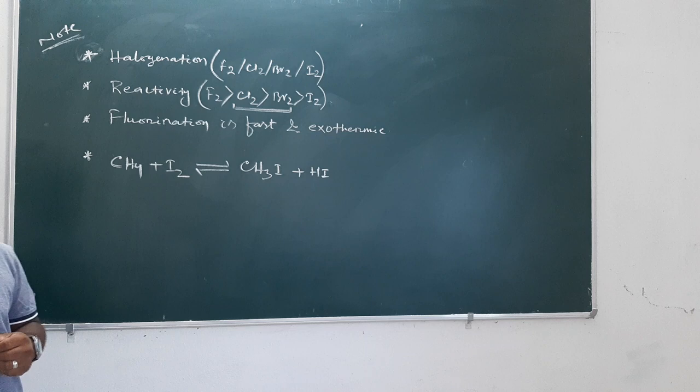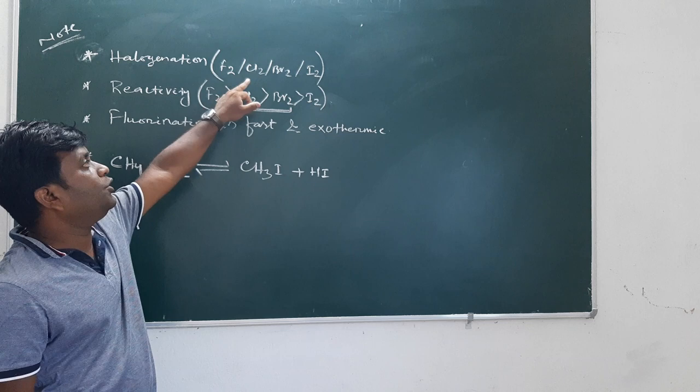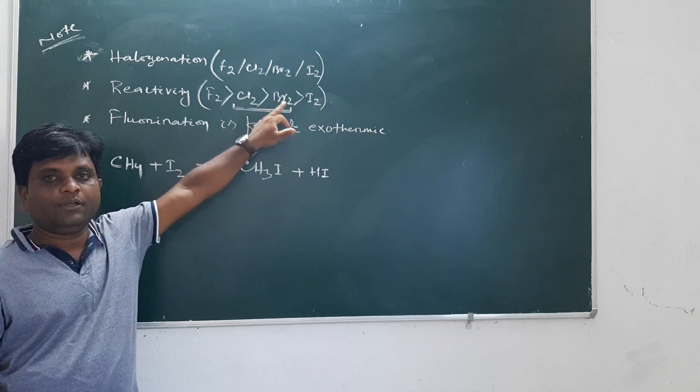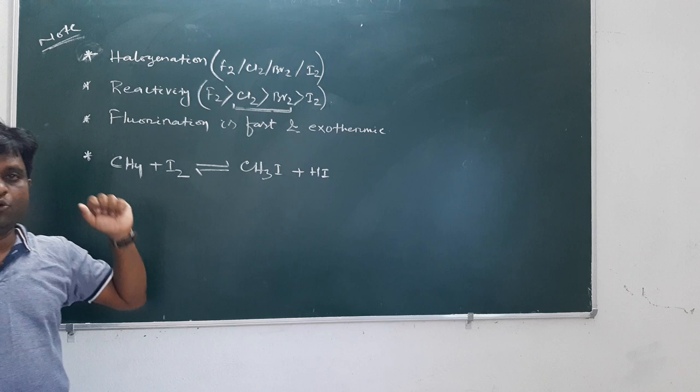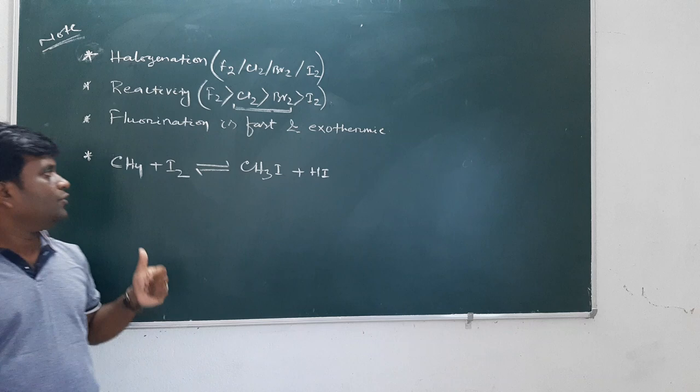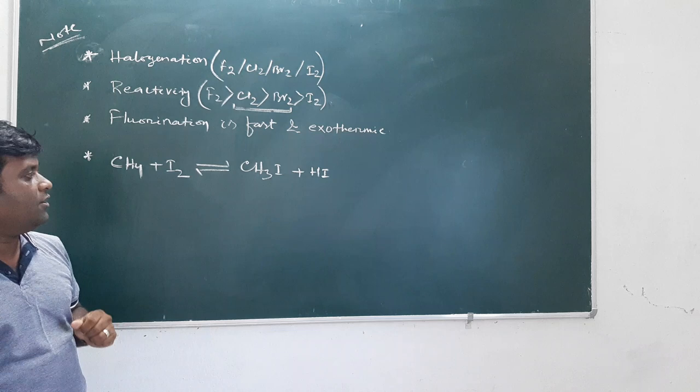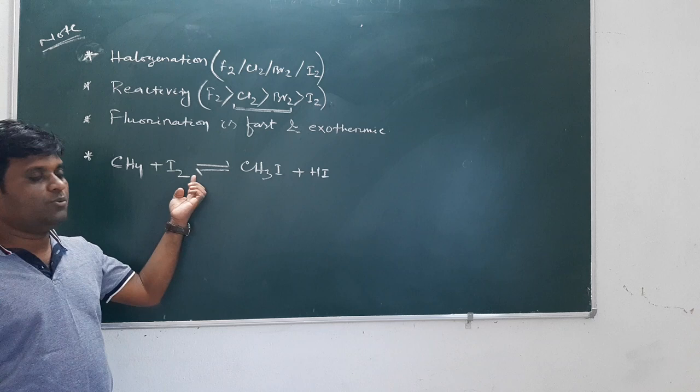Now some important points about halogenation. The reactivity towards alkanes is: fluorine greater than chlorine greater than bromine greater than iodine. Fluorination is very fast, which cannot be controlled, and it is highly exothermic. For iodination, CH4 plus I2 is a reversible reaction forming CH3I plus HI. This reaction is reversible.